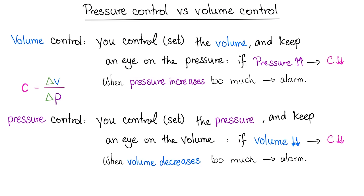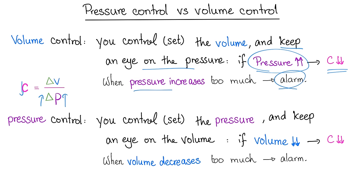Pressure control versus volume control. Volume control: you set the volume and keep an eye on the pressure. If pressure starts to increase, it means compliance is decreasing — there is a lung pathology. When pressure increases too much, an alarm goes off. Pressure control is the opposite: you set the pressure and keep an eye on the volume. If volume starts to decrease, compliance is decreasing. When volume decreases too much, an alarm goes off.